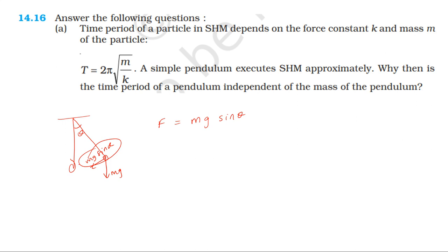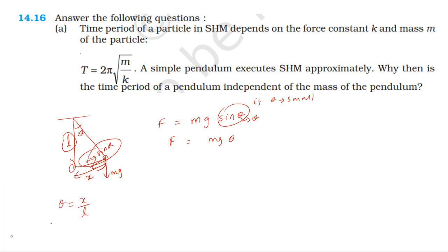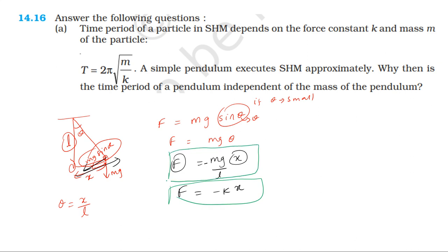When theta is small, sin theta approximates to theta. So F equals mg sin theta, which approximates to mg theta. Since displacement x equals L times theta, we get theta equals x by L. Therefore F equals mg times x by L. The general formula for restoring force is F equals minus kx, where x is displacement away from the mean position. Comparing, F equals mg x by L.